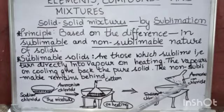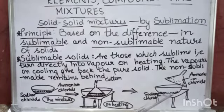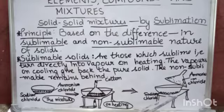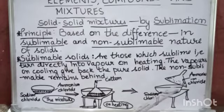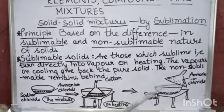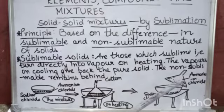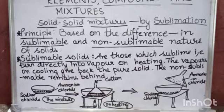The condensed solid inside the funnel is ammonium chloride. Sodium chloride, since it is non-sublimable, remains behind in the dish. This is how we can separate sublimable from non-sublimable. This process is called sublimation.